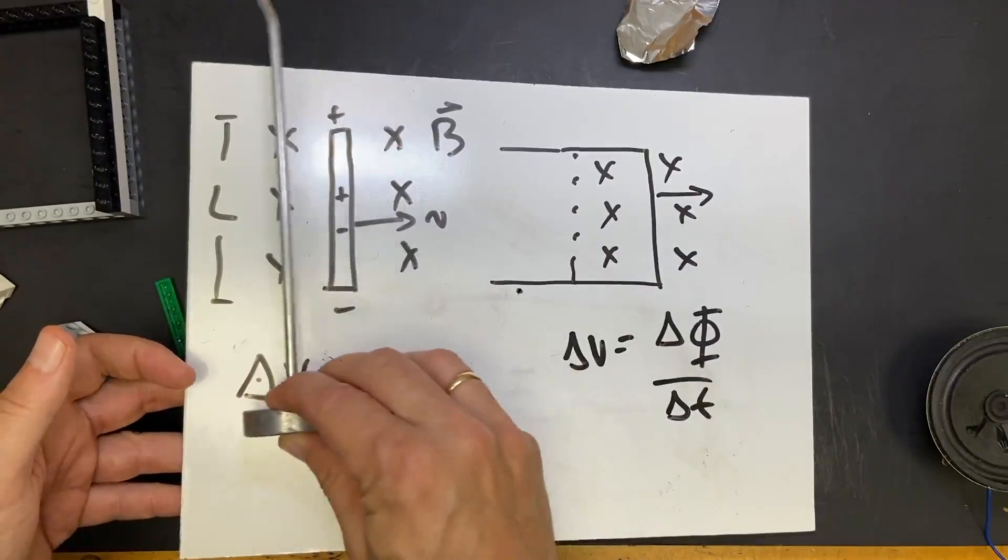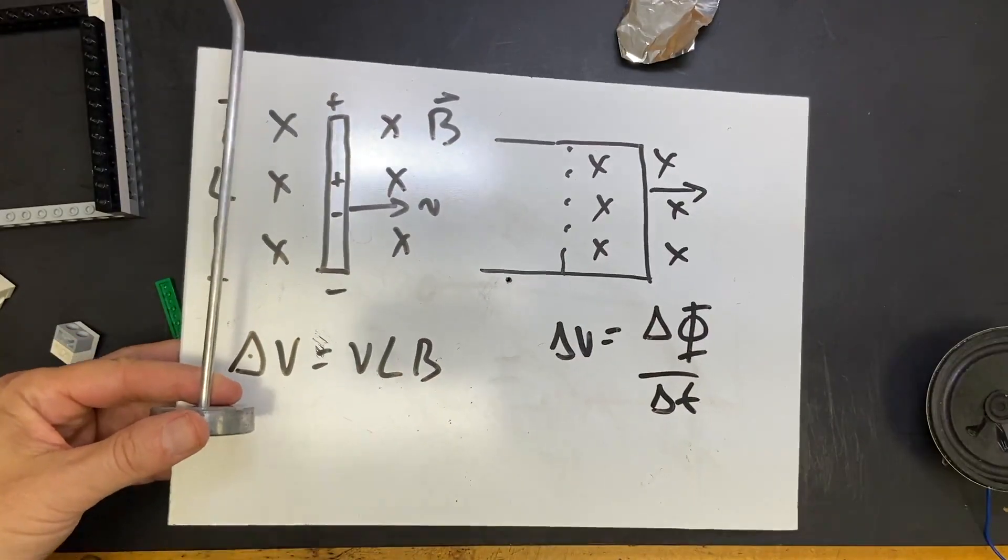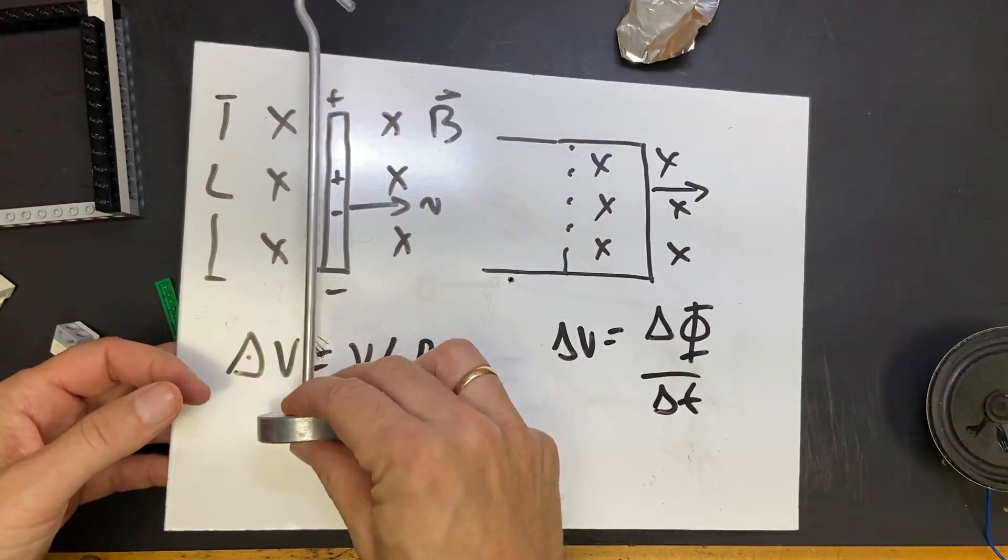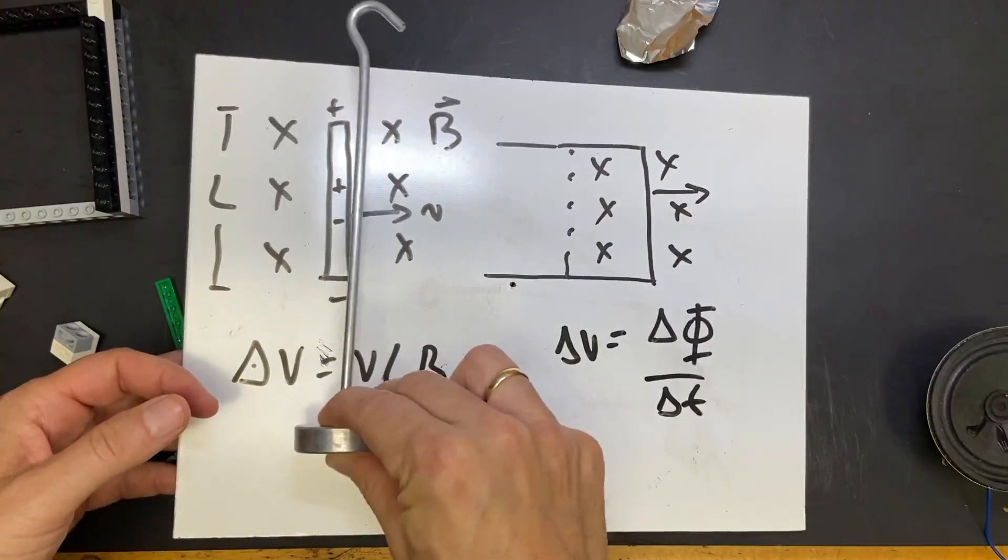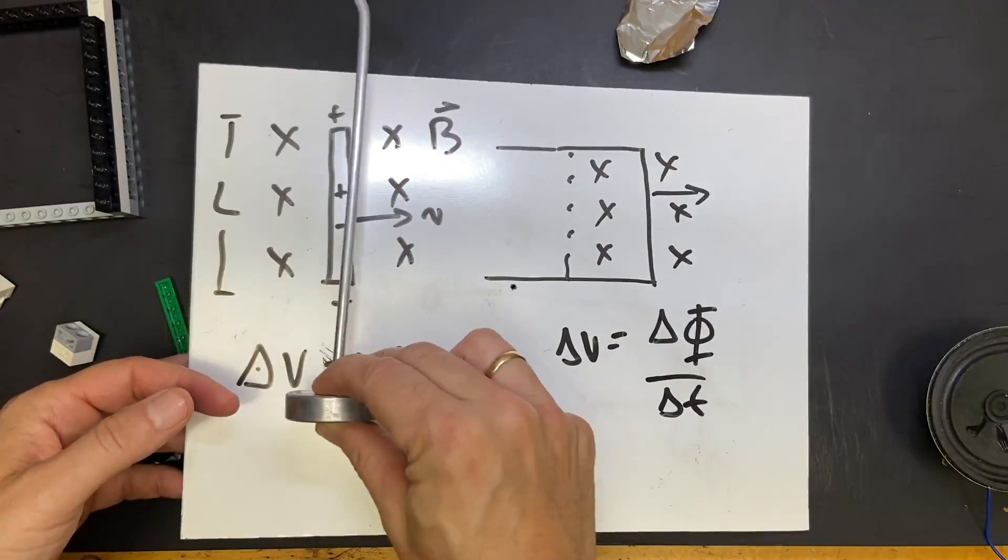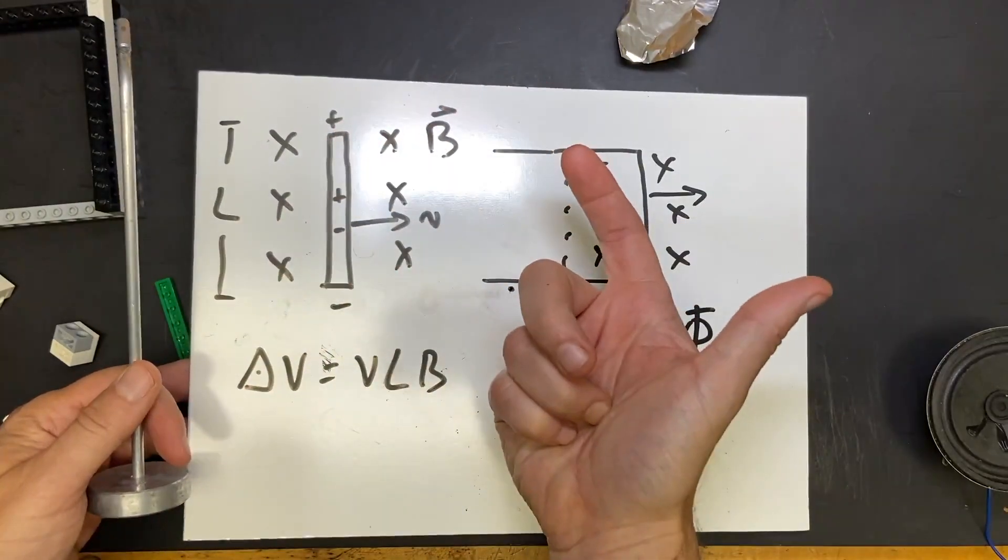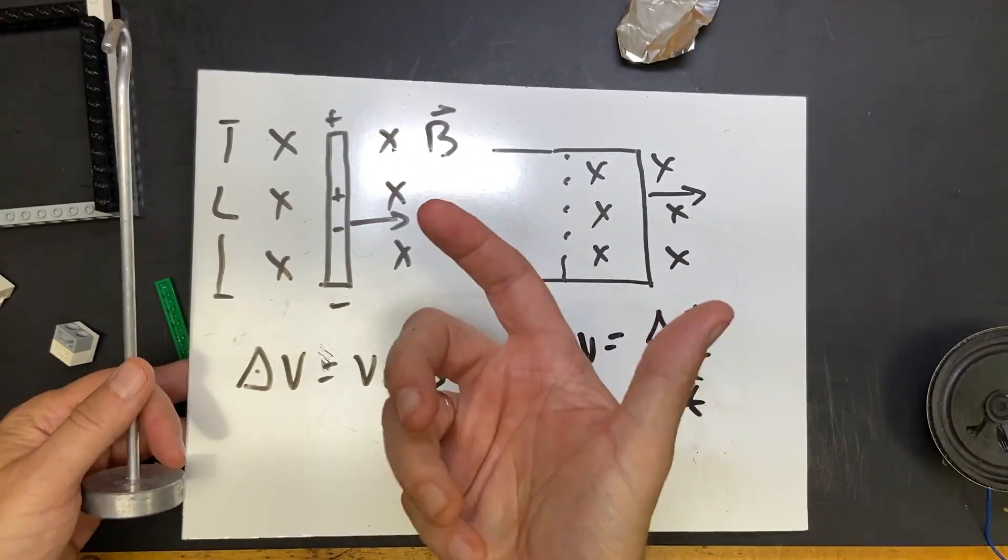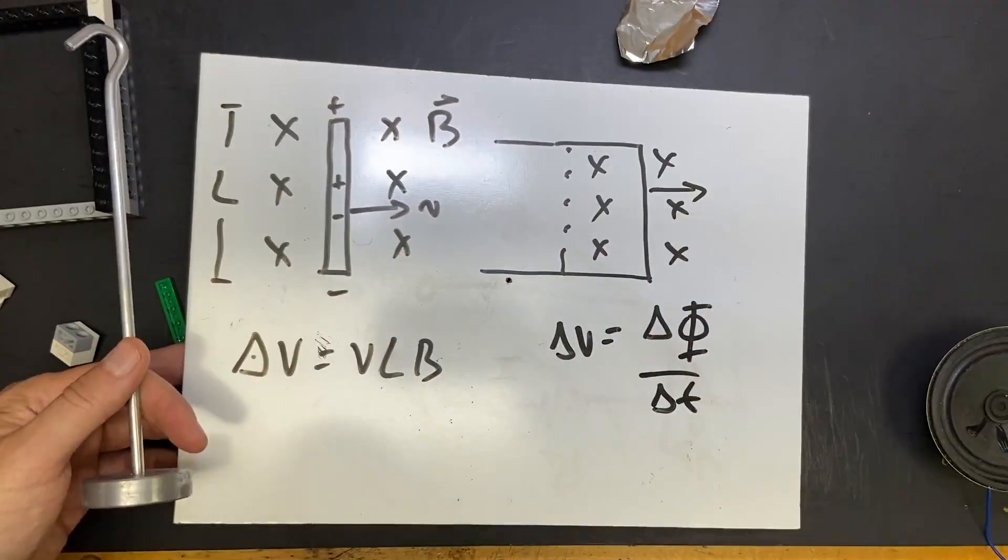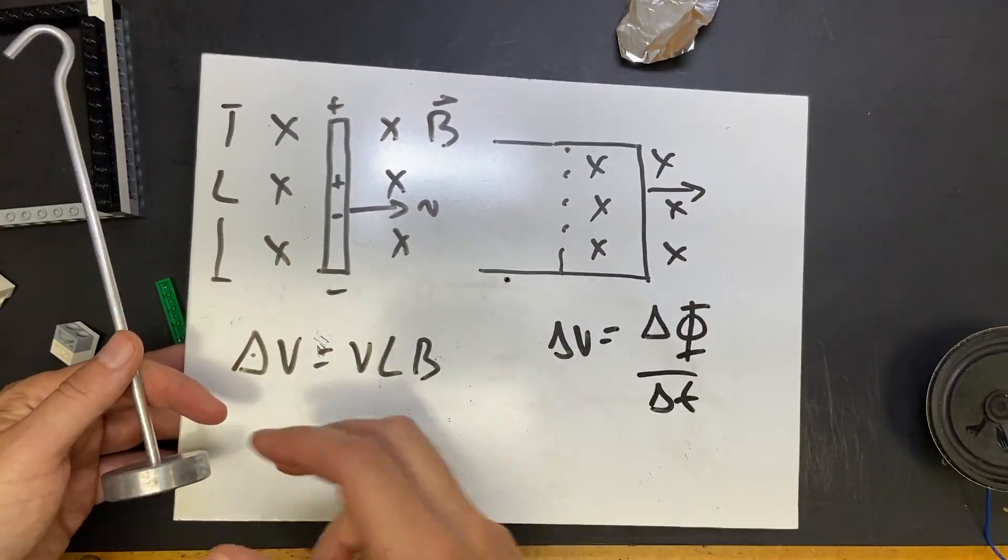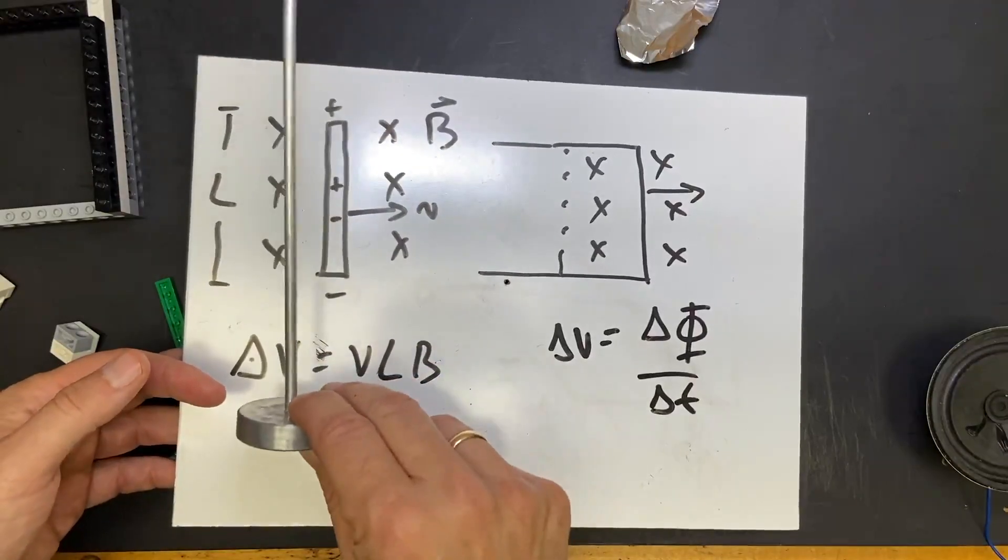So if I can move this back and forth with just my voice, with the air pushing this, then the voltage across there will be dependent on the velocity and I can use that as a microphone, because the microphone has a changing voltage that changes with frequency and that's how you make a microphone.